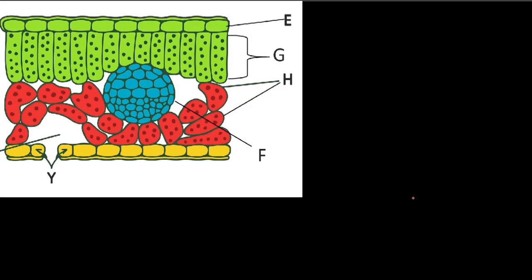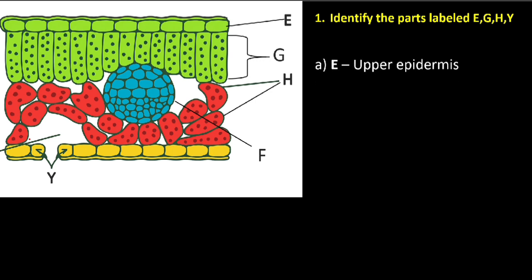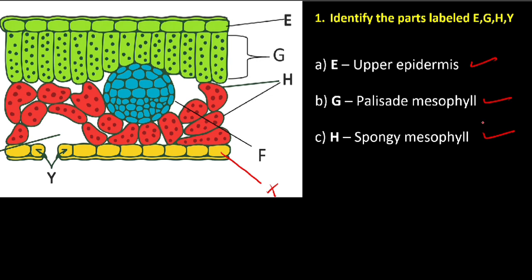Let's go to another diagram — this is the internal structure of a leaf. Identify the parts labeled E, G, H, and Y. E is called the upper epidermis; there is also a lower epidermis. G is the palisade mesophyll layer. H is called the spongy mesophyll. Y we call the guard cells — these control the opening and closing of the stomata, which is this hole.